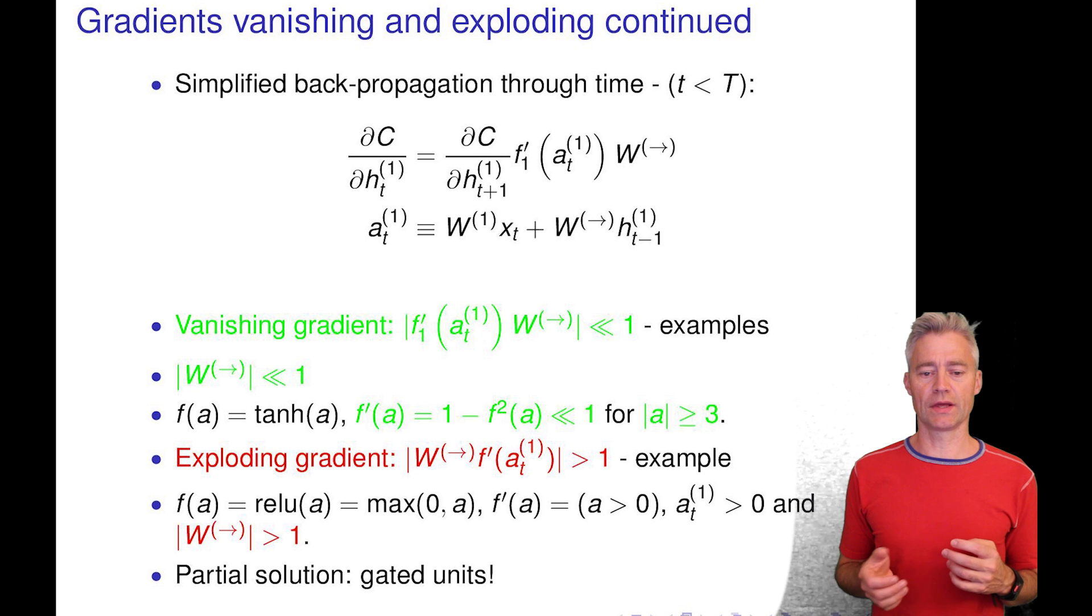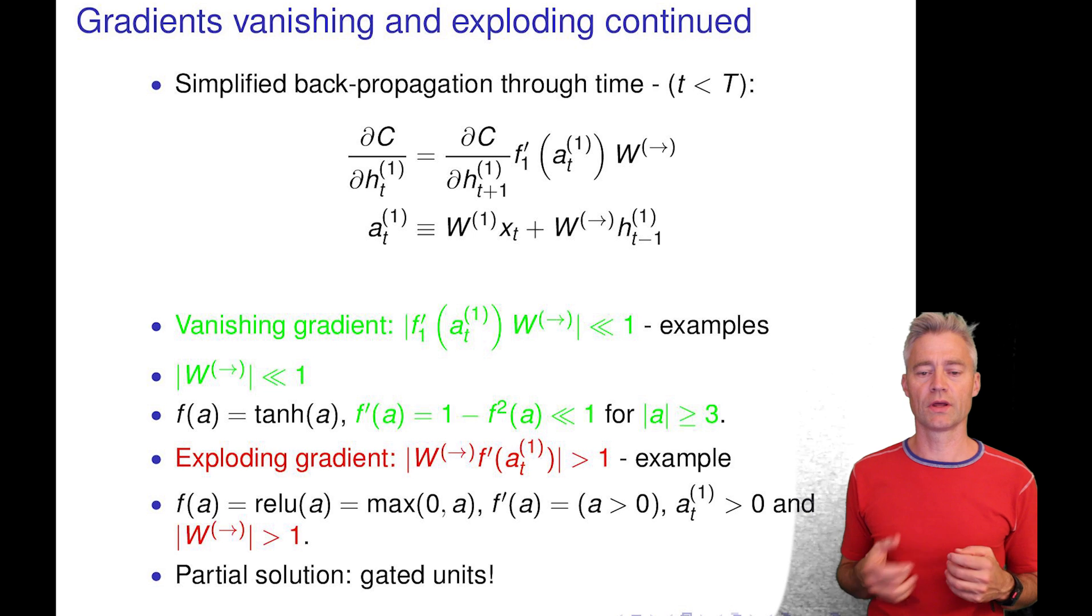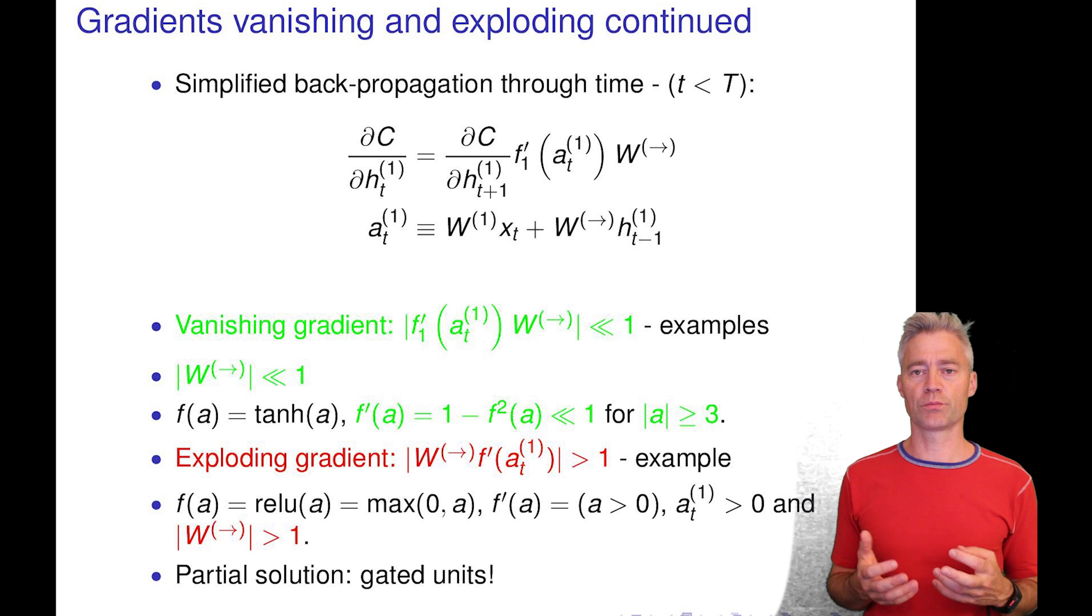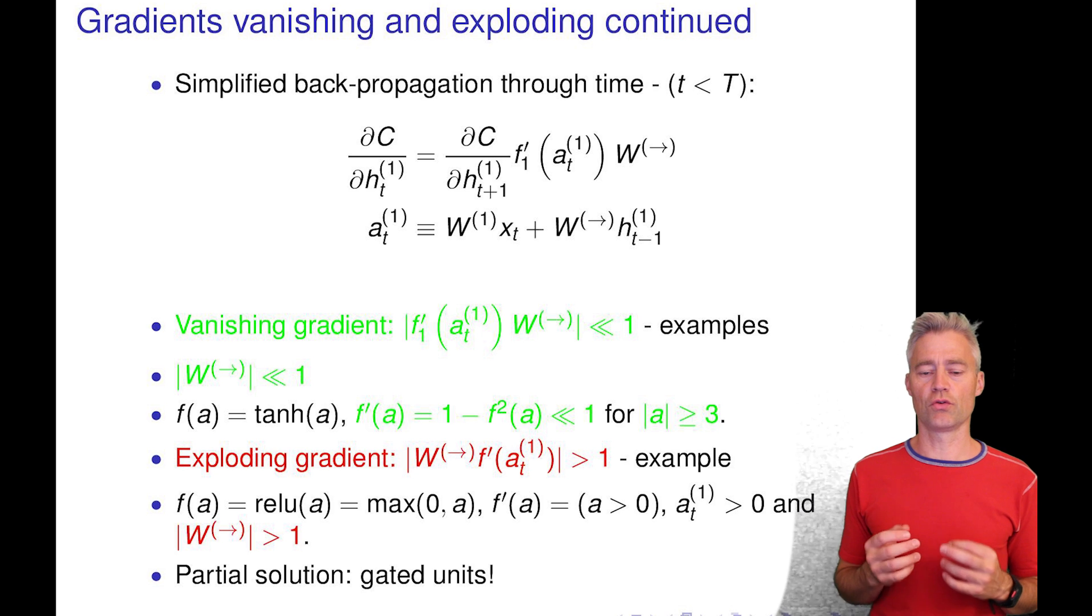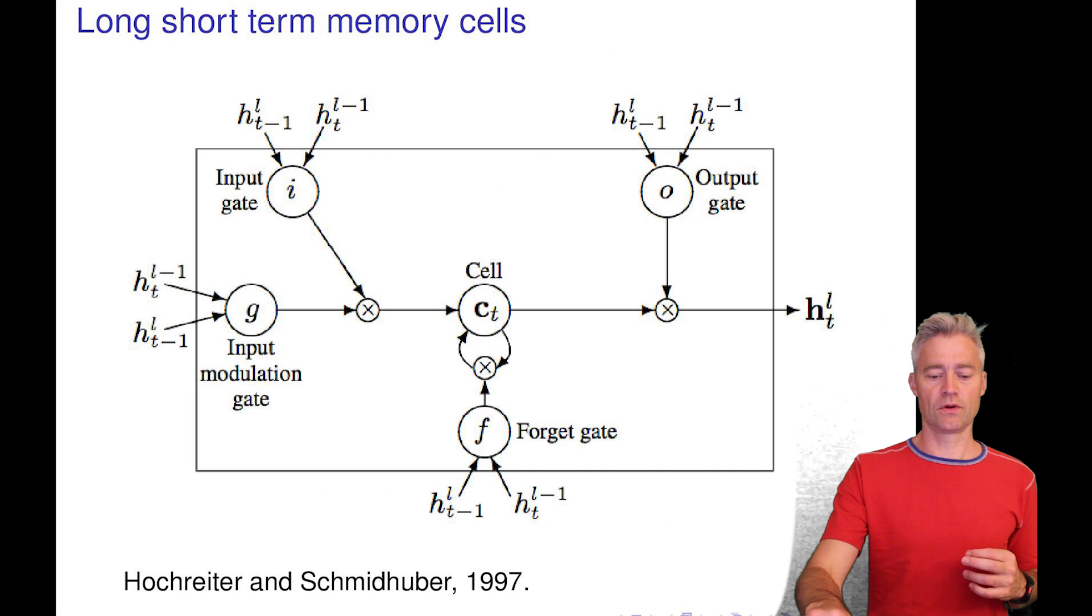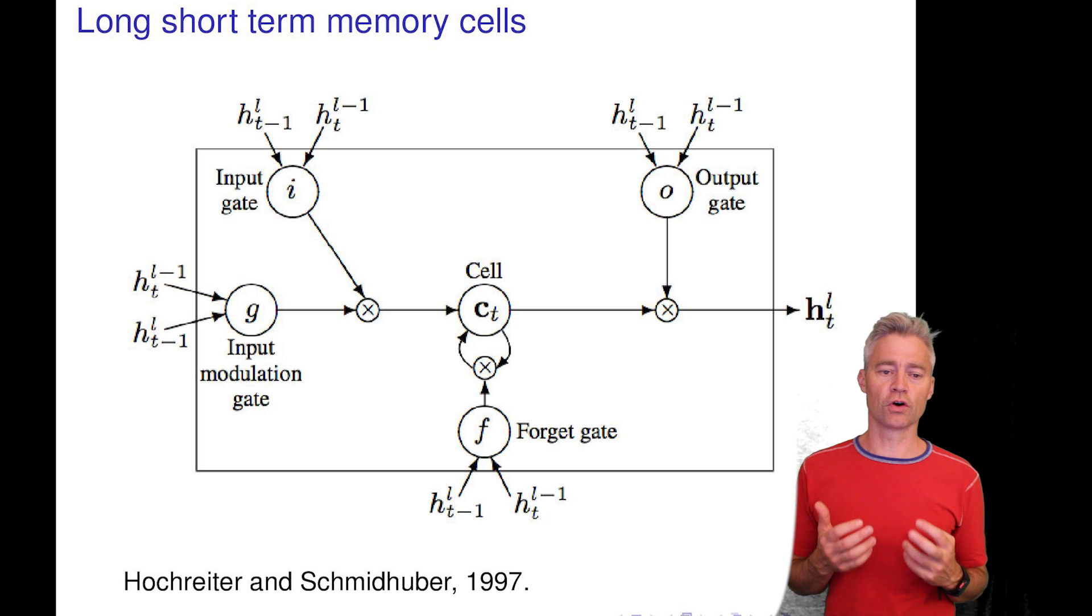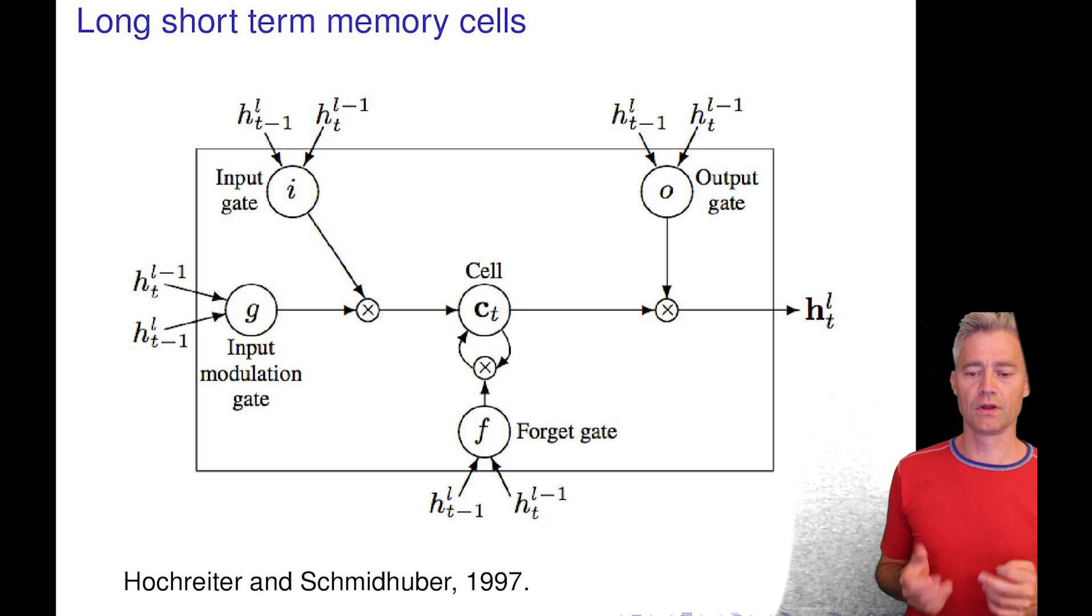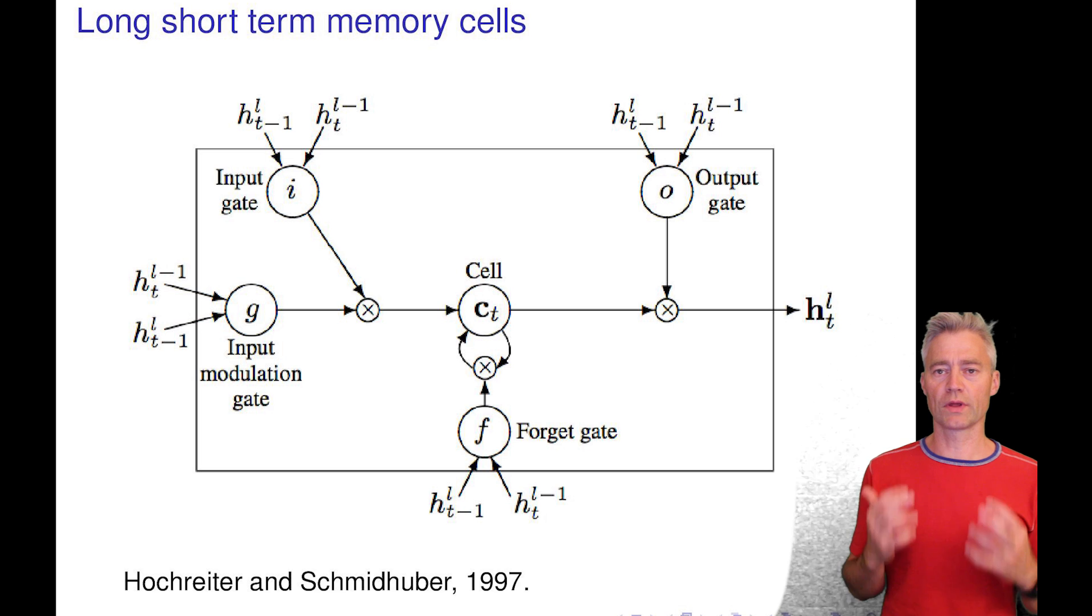A partial solution of this thing about retaining gradients, not avoiding vanishing gradients, is specifically designed units in recurrent neural networks called gated units. So the most famous and original gated unit is this long short term memory cell. It's a little bit complicated to explain all the details.